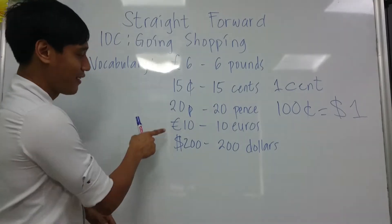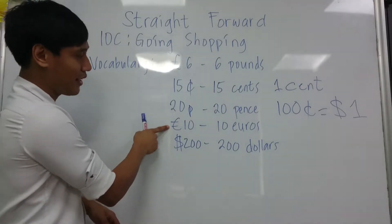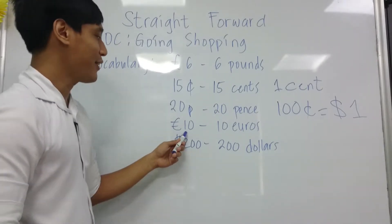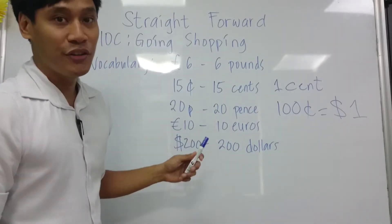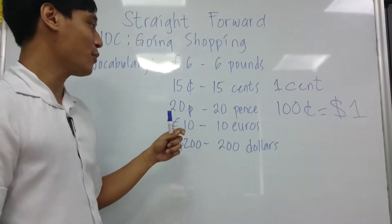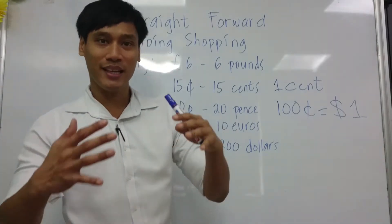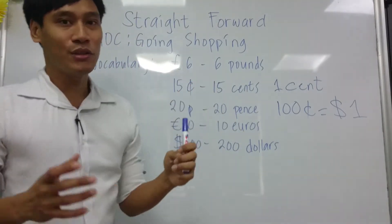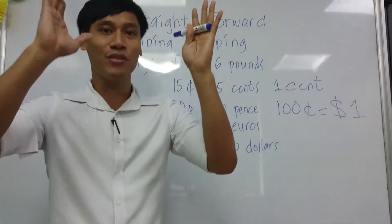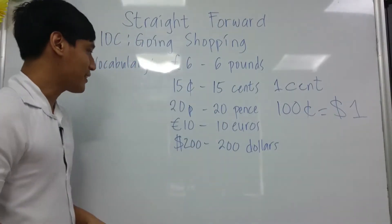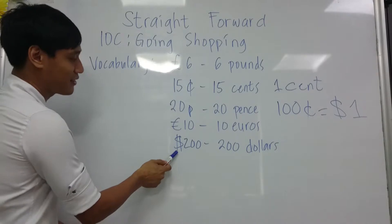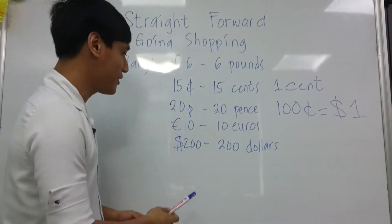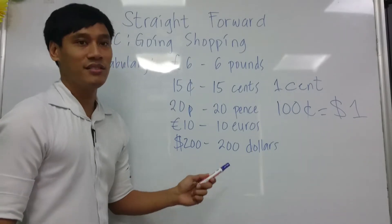Next, this symbol is euros. This is also used as British currency, usually in the south. Pounds are usually in the UK, the north. Next is the dollar sign — it's dollars, and this is read as 200 dollars.